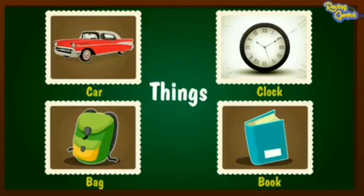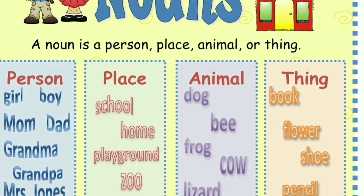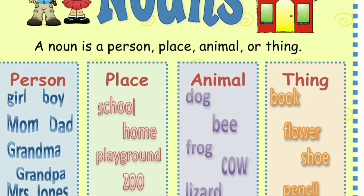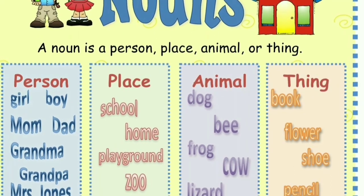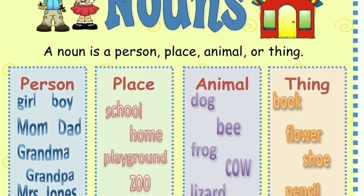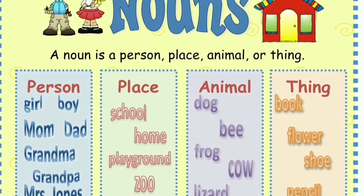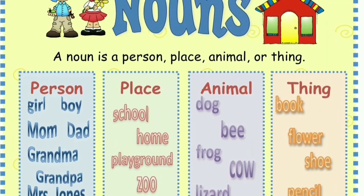Now children, write any five names of a person, place, animal or thing. I'll see you next time. Bye. Thank you.